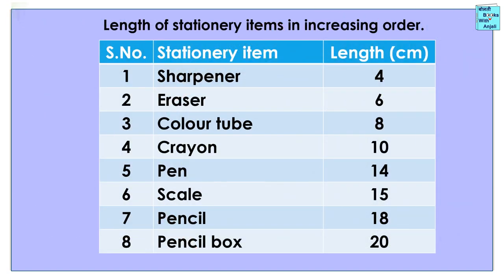This is the table in which we have arranged the stationery items in such an order that their length is increasing from top to bottom. The shortest is sharpener at 4 cm and the longest is pencil box at 20 cm.